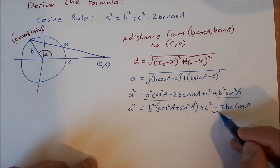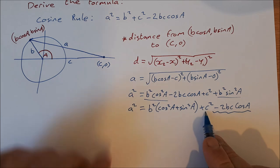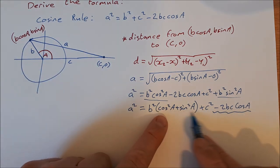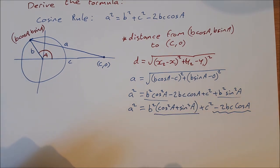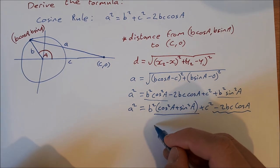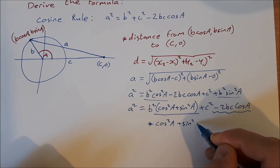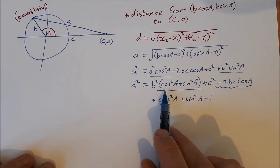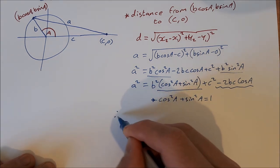You can see that this bit is what I'm looking for at the end. So is the c squared, I have that. What about this b squared with this here? Well, cos squared A plus sin squared A is equal to 1. So you can just write that cos squared A plus sin squared A is equal to 1. So we can just replace that, so it's b squared times 1 is just b squared.